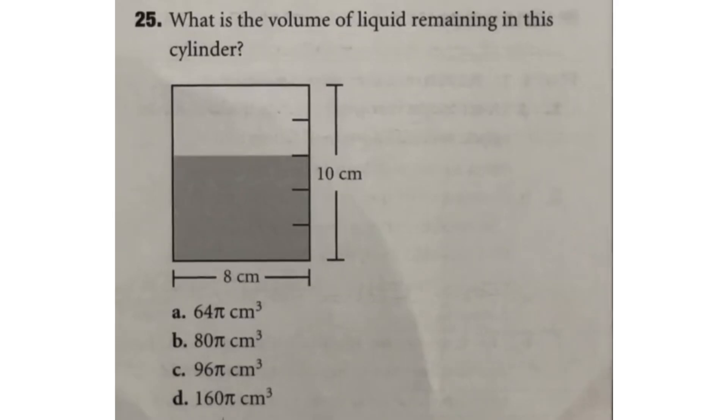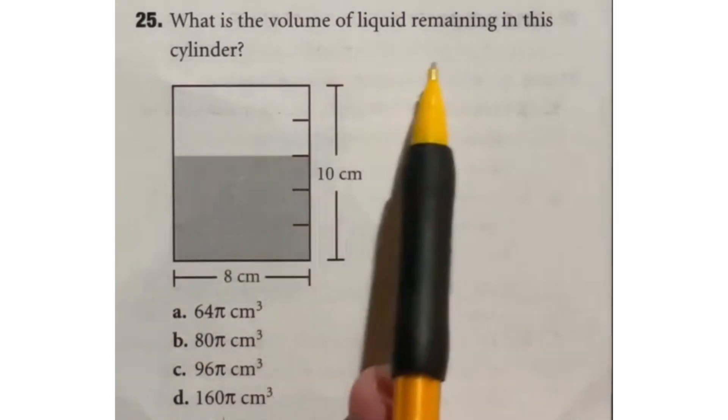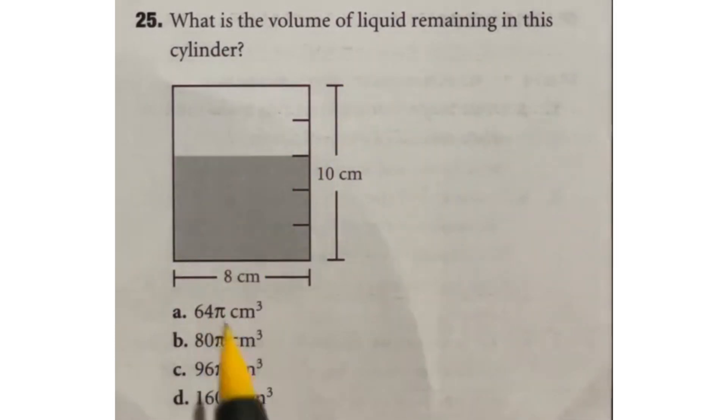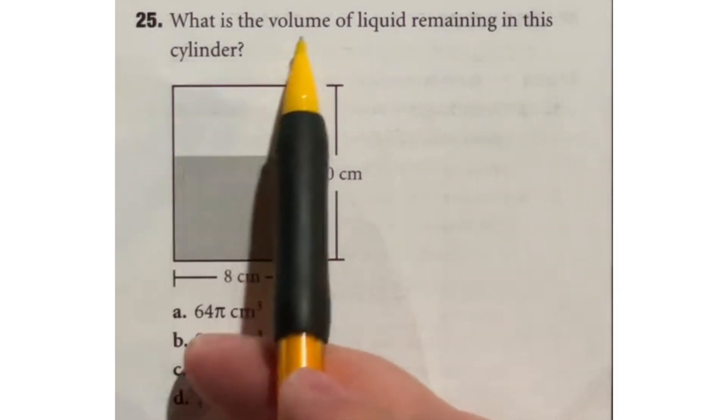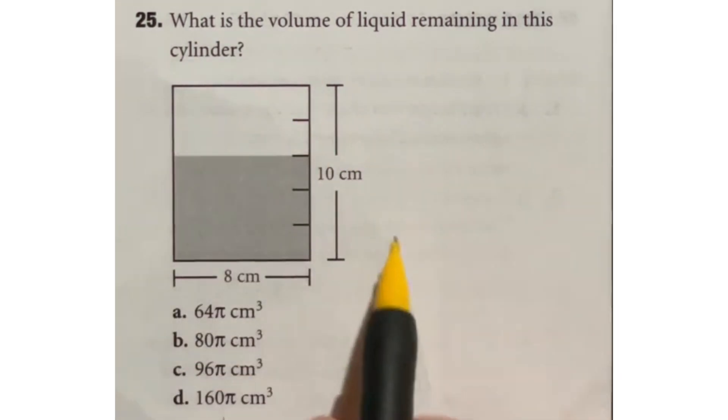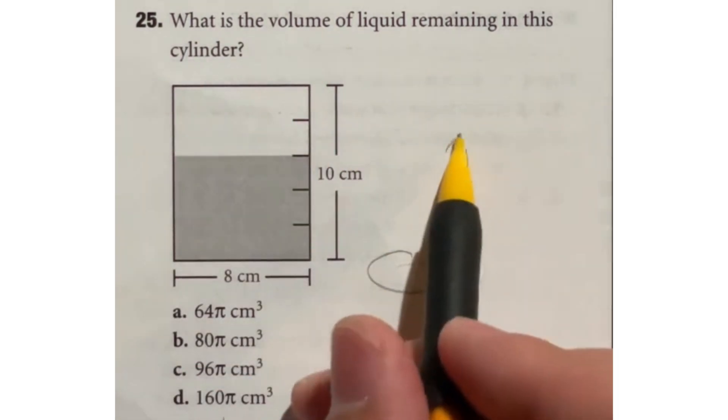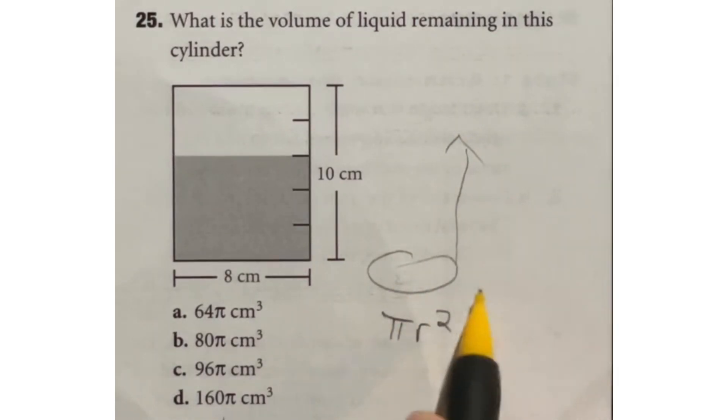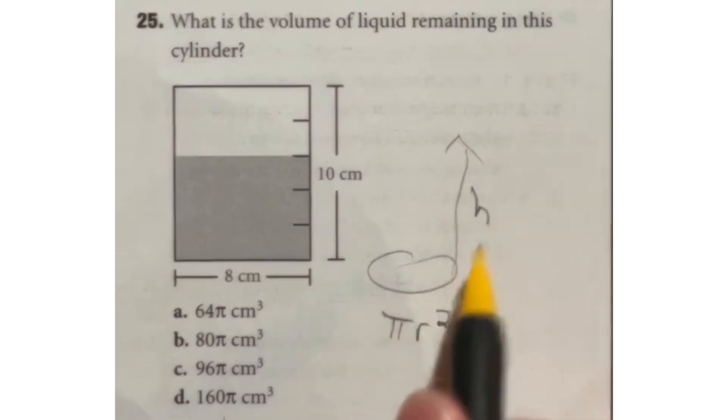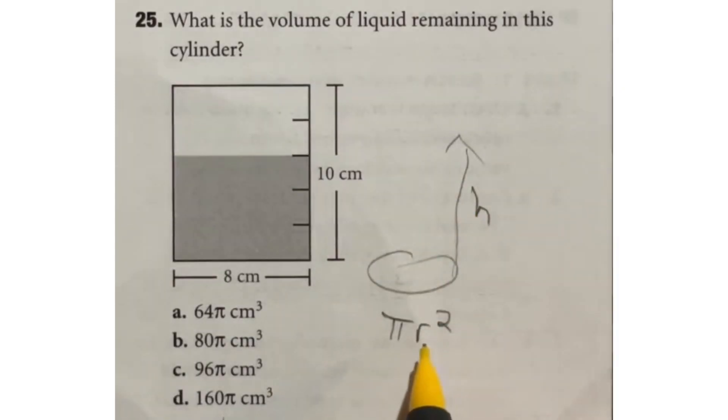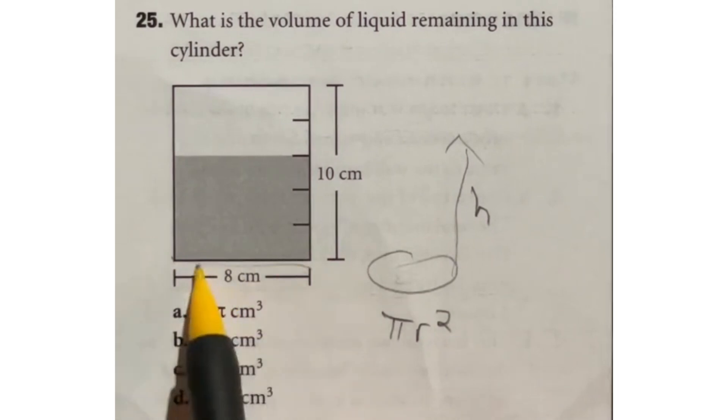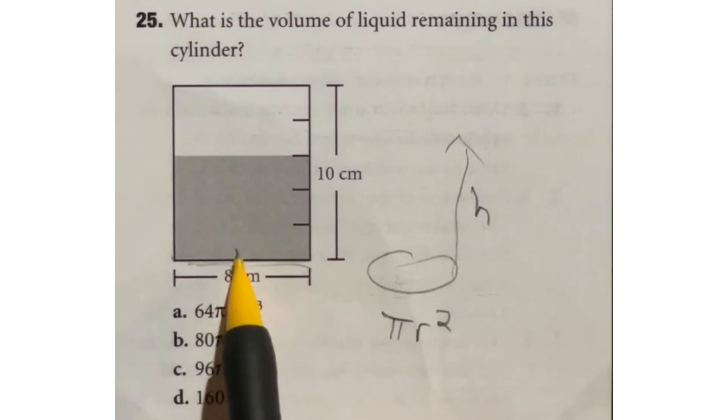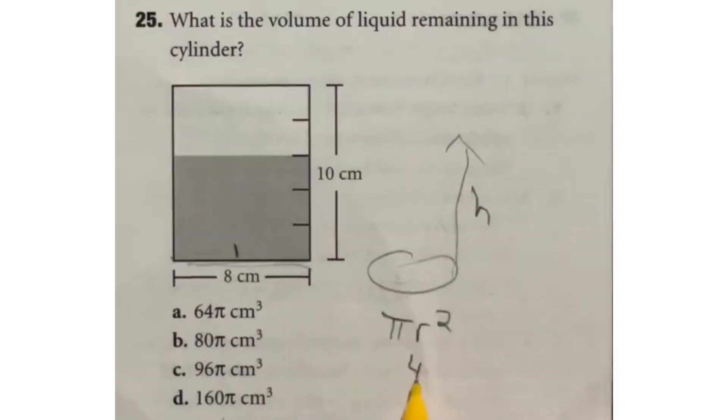So a lot of things to look at in number 25. It says, what's the volume of the liquid remaining in this cylinder? First off, how do you find the volume of a cylinder? Well, it's a circle that's going up into the air. So the area of a circle is pi r squared, where r is the radius. And then we have to multiply that by whatever the height is, because you're going up from there. So in this case, our circle is down here at the bottom of our cylinder. So half of that would be our radius. So we're looking at 4. Well, 4 squared is 16. So we have 16 pi.